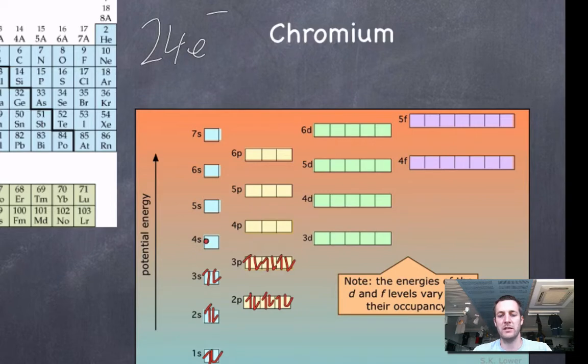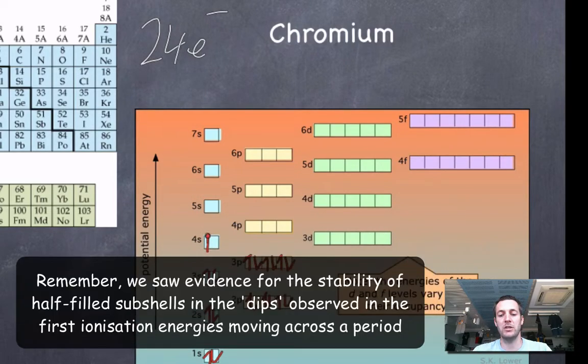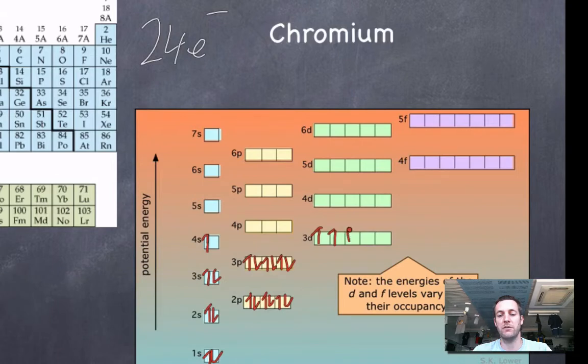So I could put 2 into 4s, that would leave me with 4 to put into 3d. I could put four electrons into four of these orbitals, but by having a half-full d subshell, chromium becomes a bit more stable. So it actually just puts one electron in 4s and then it's got five to put in its d subshell, and it has a half-full shell there and that's a little bit more stable.